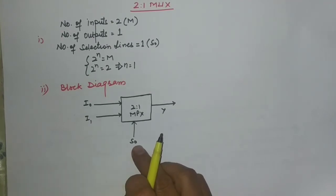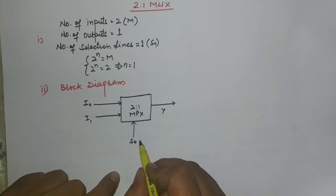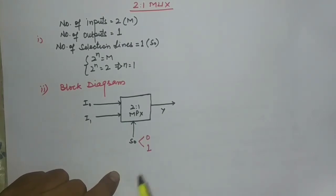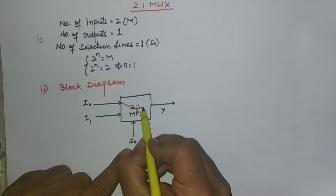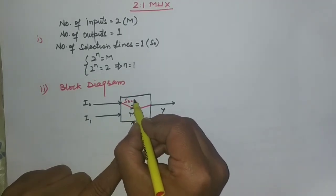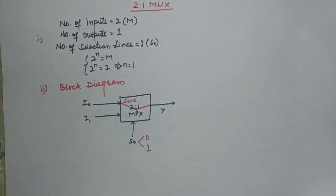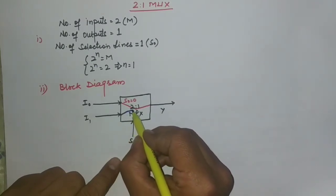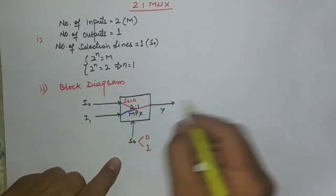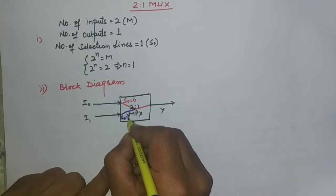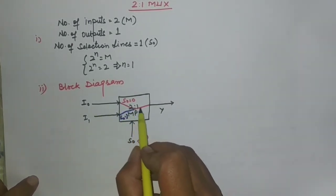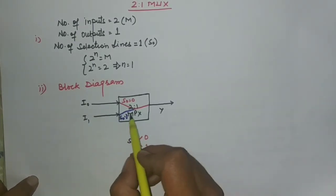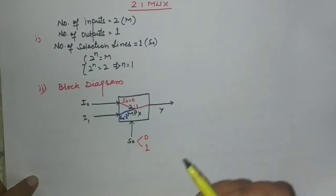We know that s0 can have only 2 values: either 0 or 1. When the value of s0 is equal to 0, then i0 will be selected and directed as the output. When s0 is equal to 1, then i1 will be directed as the output. We discussed this in the introductory lecture on multiplexers.